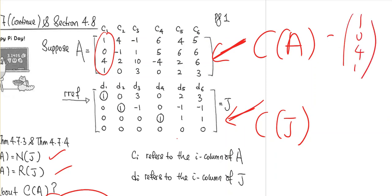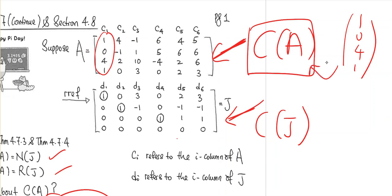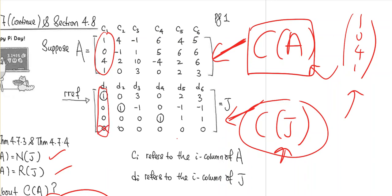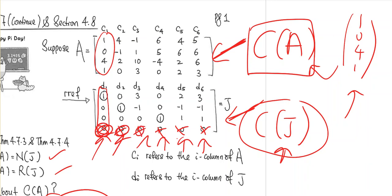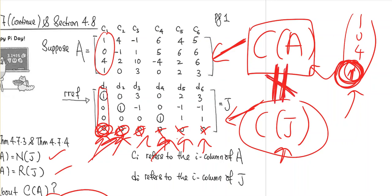For example, C1, the first column of A — say (1, 0, 4, 1) — is an element of the column space of A, since the column space consists of all linear combinations of the columns. But no matter what you do with the vectors in the column space of J, there's no way to get (1, 0, 4, 1), because all column vectors in J have a last entry of 0. So no matter how you linearly combine all the column vectors of J, the last entry must be 0, but the last entry of (1, 0, 4, 1) is not 0. So these are essentially very different sets — they are not the same.